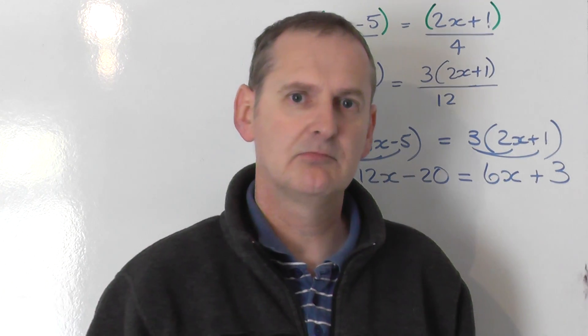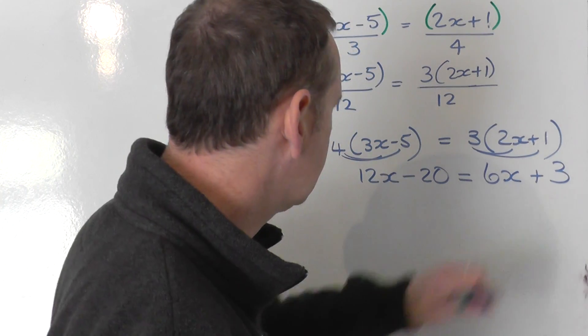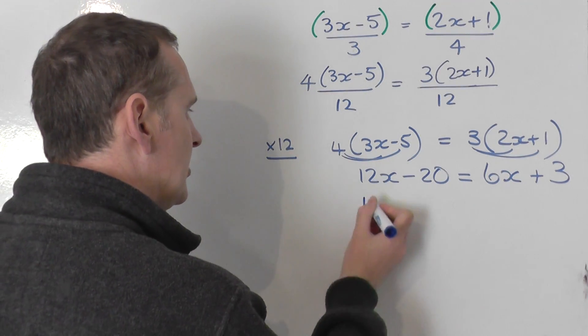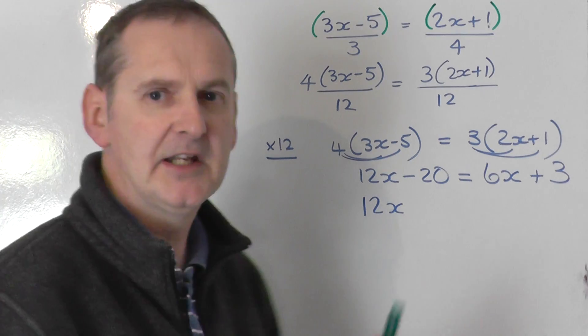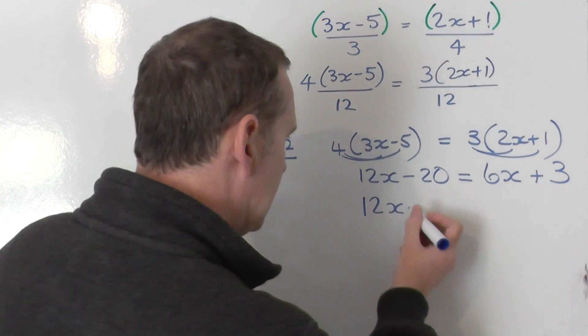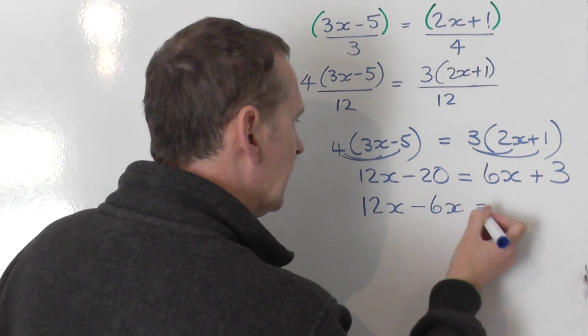Which side's got most x's? Well, 12x on the left, 6x on the right. 12x is more than 6x. 12x stays put then. I take the 6x to the other side to join it. Plus 6x becomes minus 6x on the left.